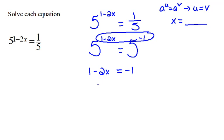So, I could move my 1 over, which would give me negative 2x equals negative 2. And then, dividing both sides by negative 2, we would get x equals 1.